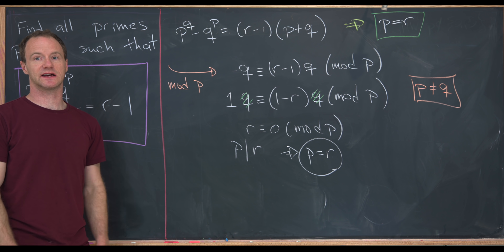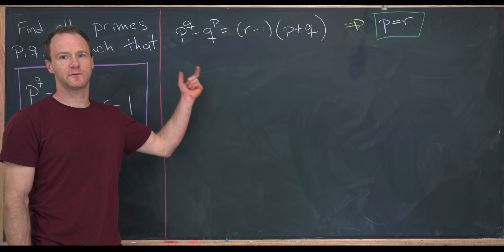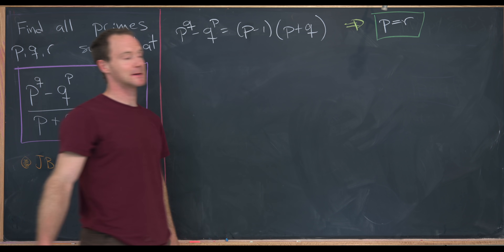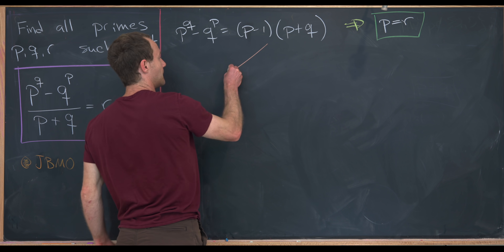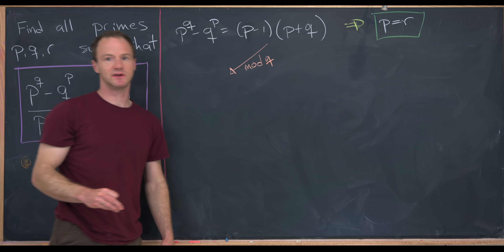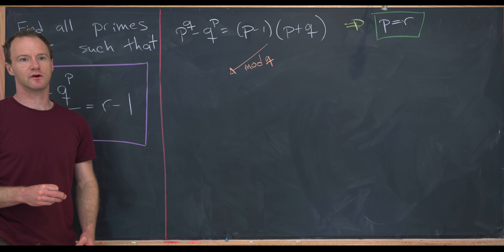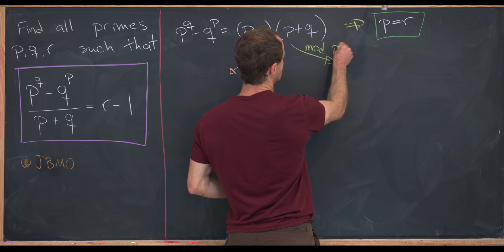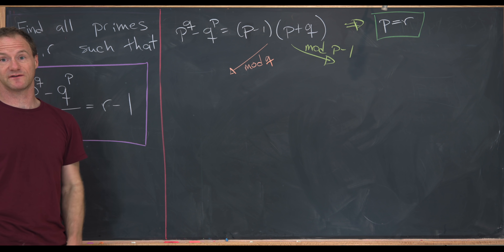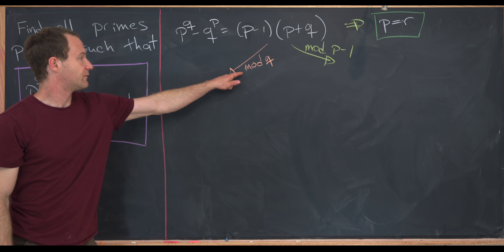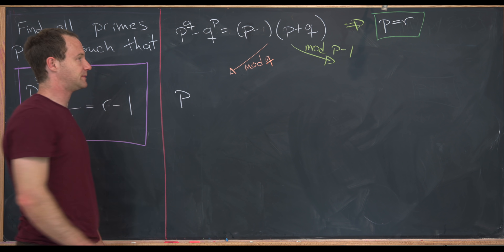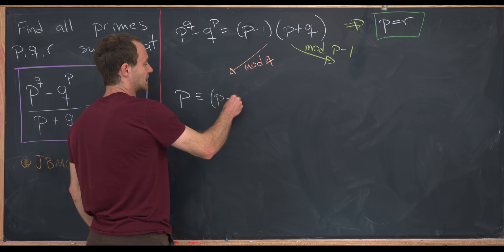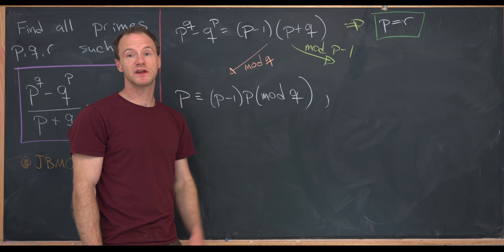So we've determined our first important fact: any triple of primes satisfying this equation must have P equal to R. Now we replace R with P in the equation. We'll do two more reductions: one mod Q, and one mod P minus 1. The mod P minus 1 reduction is motivated by the P minus 1 factor on the right-hand side. Reducing mod Q: P to the Q is congruent to P mod Q by Fermat's Little Theorem, and the right-hand side becomes P minus 1 times P modulo Q.